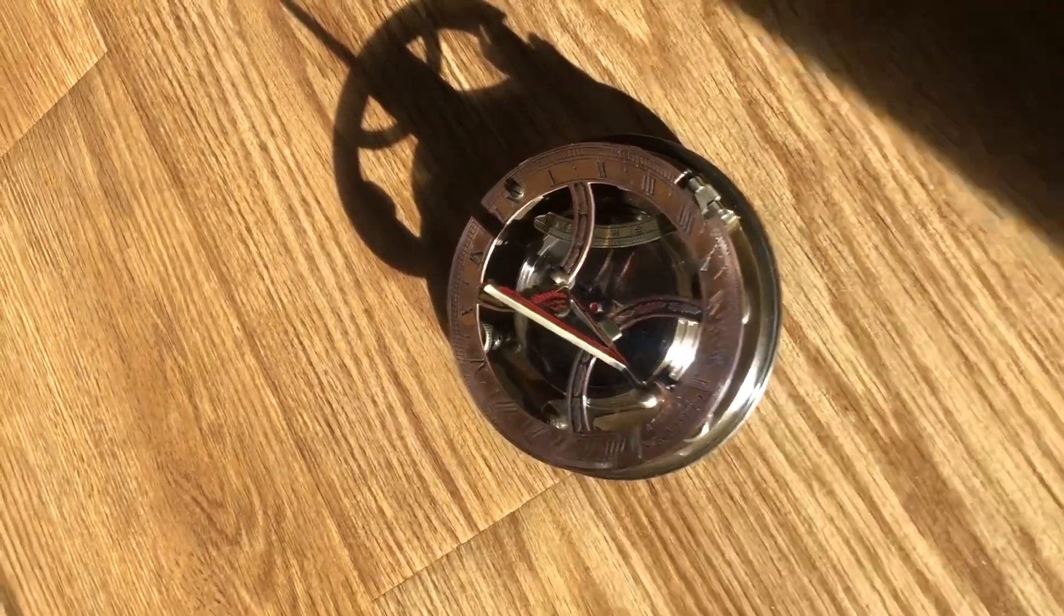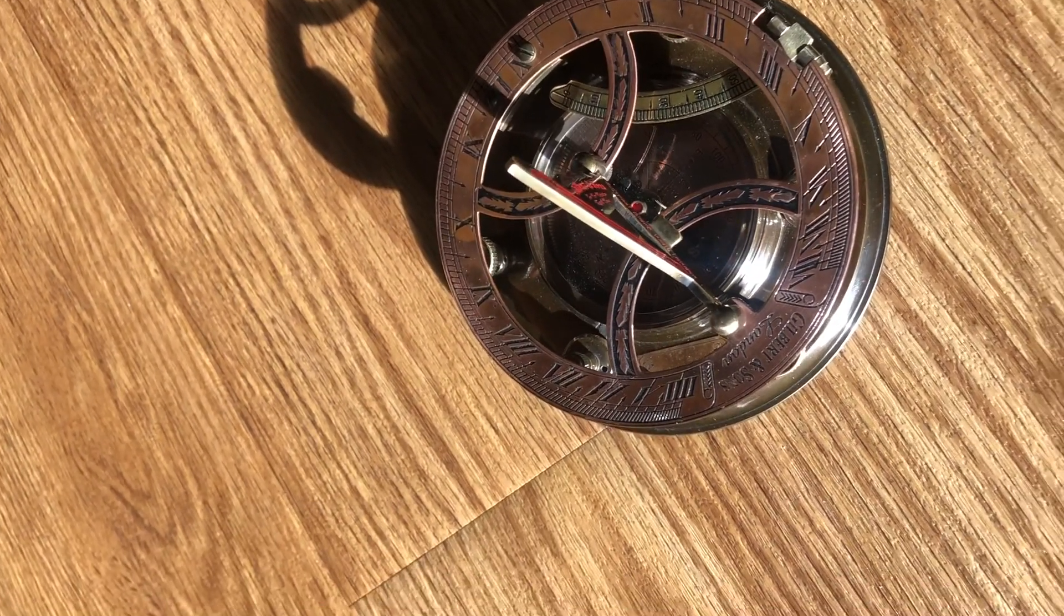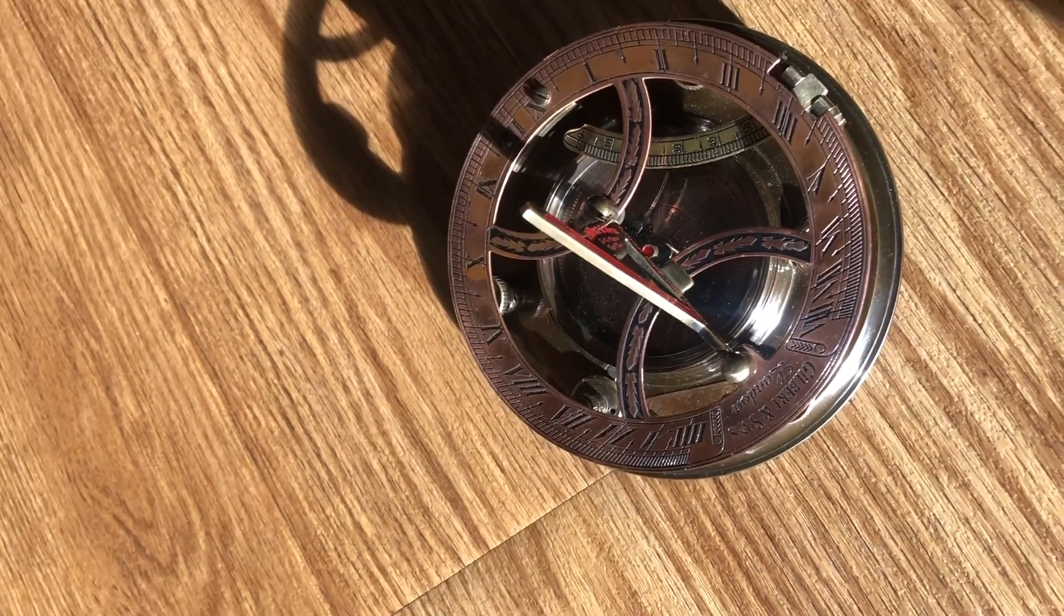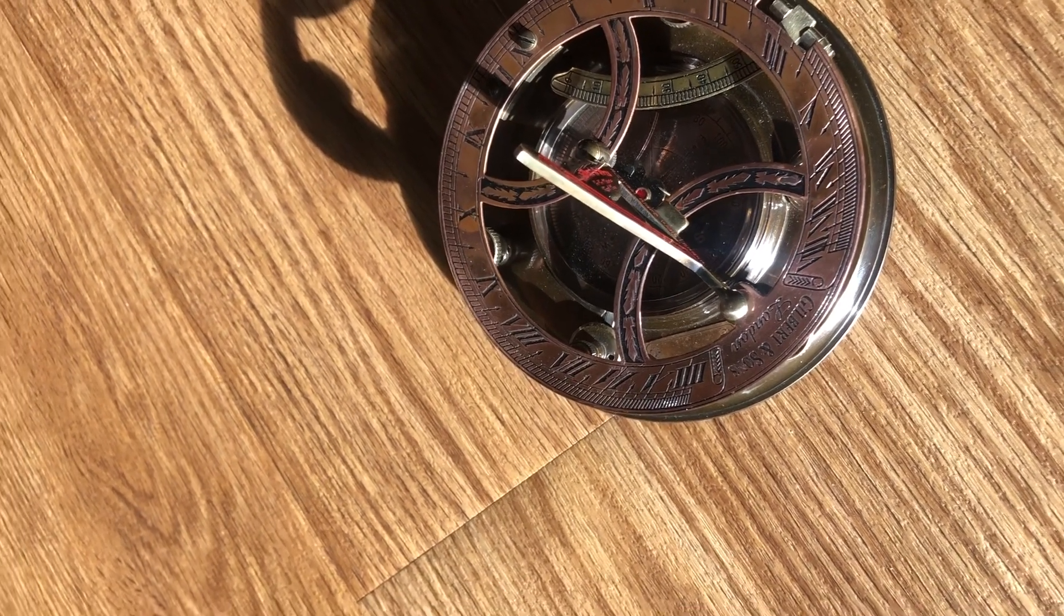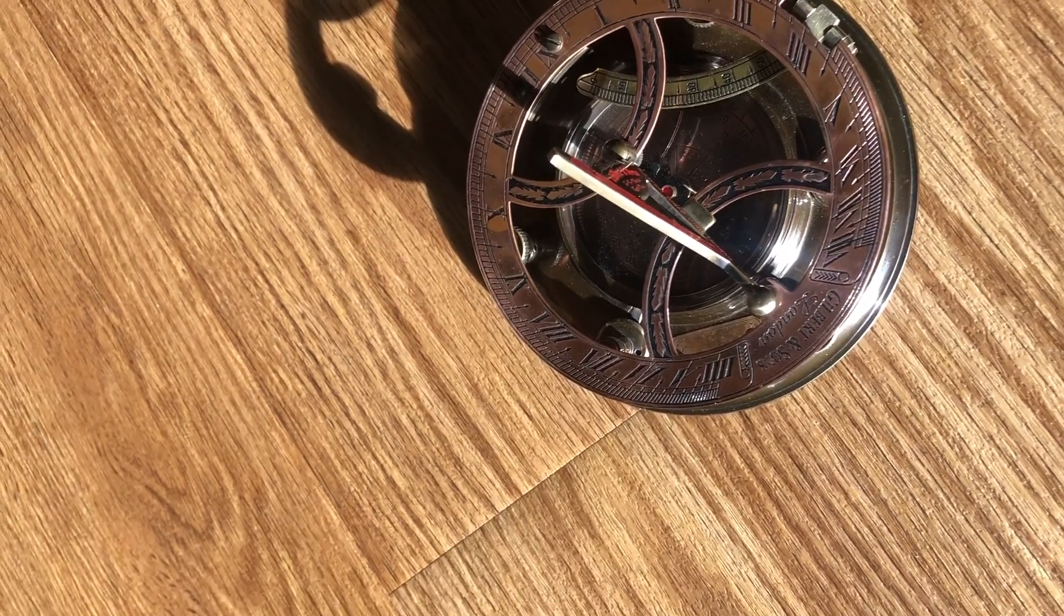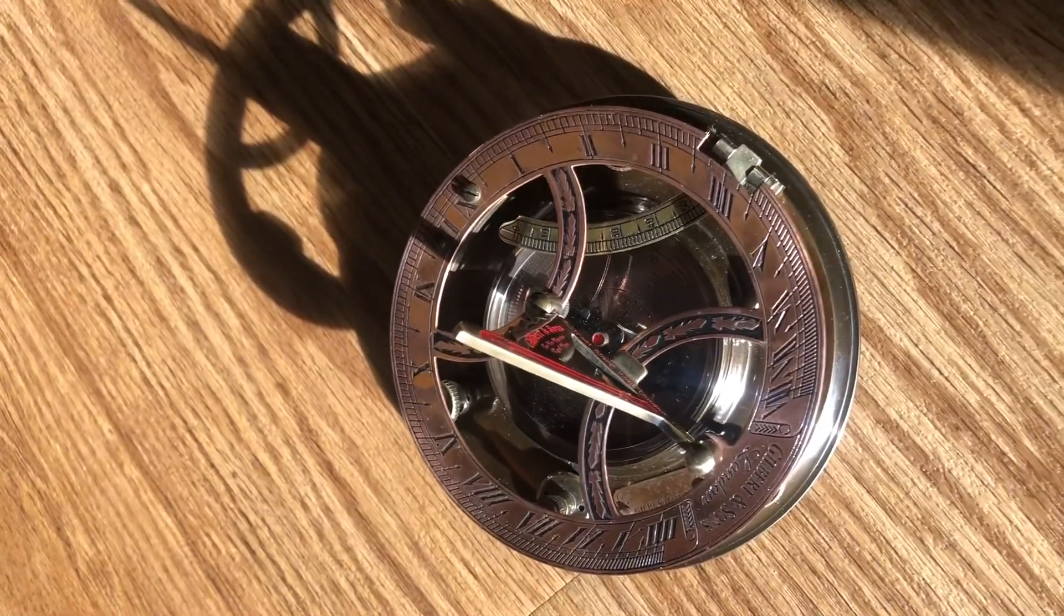Hey guys, just another tool for a prepper's repertoire. What happens if the grid goes down and you have no measure of keeping time? Time is a useful thing we use every day - keeping time, knowing to be at certain appointments, certain places, how long do we cook something for. What happens if you don't have a mechanical clock?